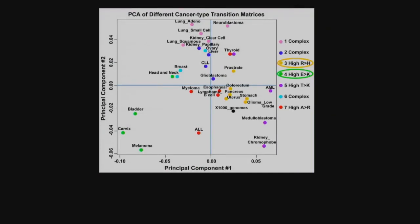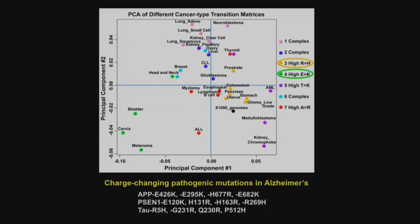We're very interested not in the mutation at the gene level but at the protein level — specifically changes in protein charge. This has not been widely discussed, but I think it's going to be possibly relevant to mutations we see in Alzheimer's, where there are many mutations that involve a change in the charge of the protein.